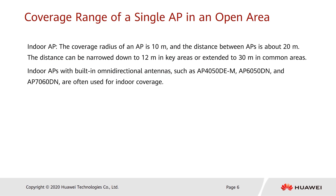Typically, the coverage radius of an indoor settled AP is 10 meters, and the distance between APs is about 20 meters. This distance can be narrowed down to 12 meters in key areas or extended to 30 meters in common areas. APs with built-in omnidirectional antennas are mostly deployed in indoor settled scenarios, so the coverage radius is used to indicate the coverage range.